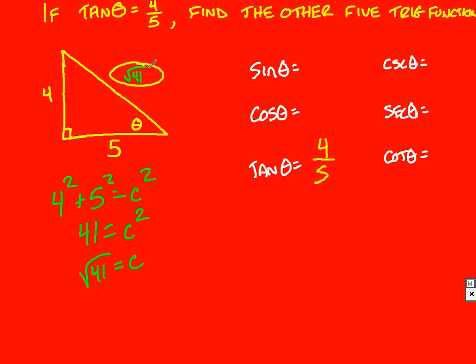Now I know what that hypotenuse is, and I can write down my answer. Sine of theta is going to be 4, the opposite, over the square root of 41, the hypotenuse. I can't leave it like that. We can't leave radicals in the denominator. So I multiply by root 41 over root 41, and I get an answer of 4 square root of 41 over 41.